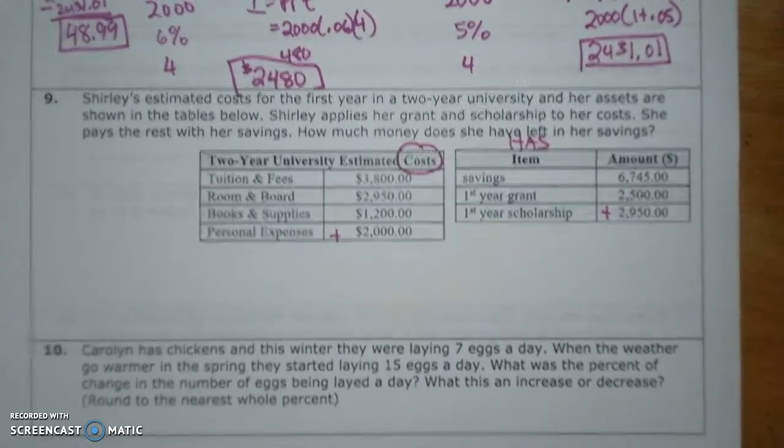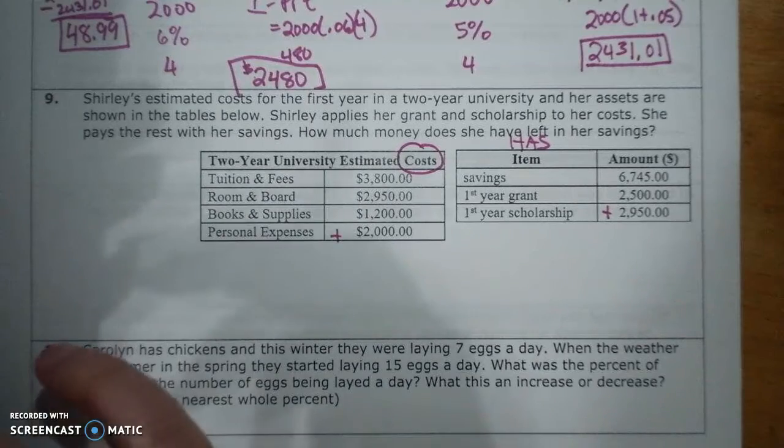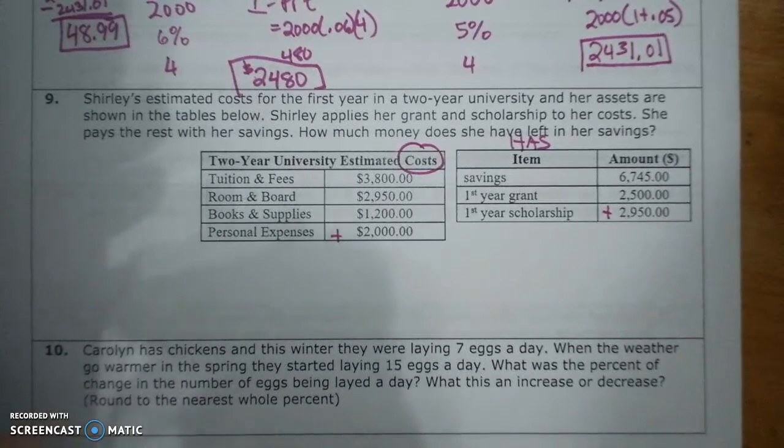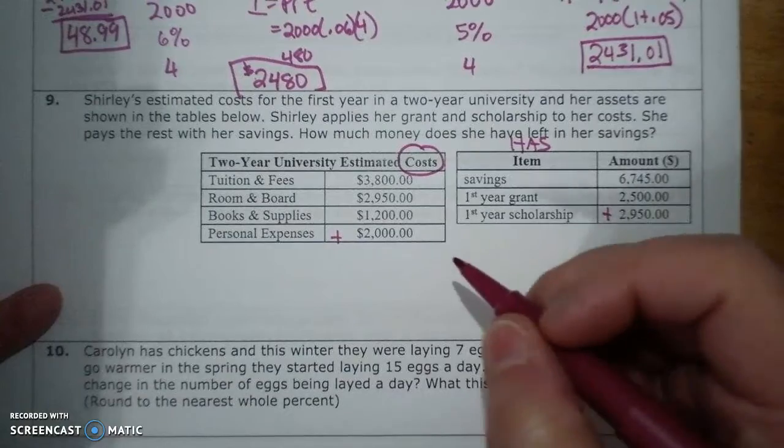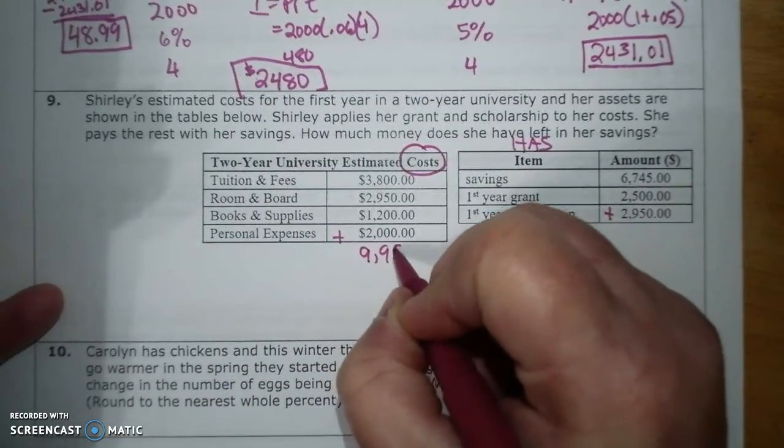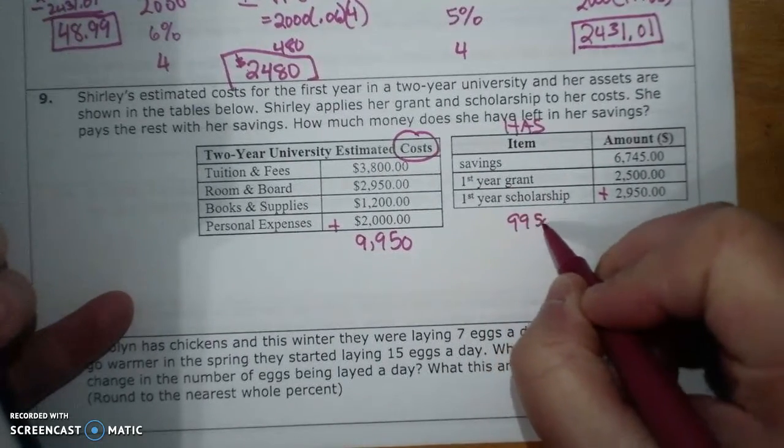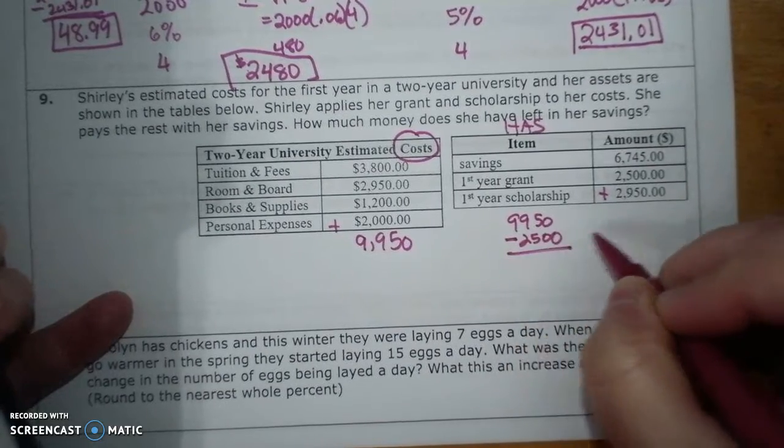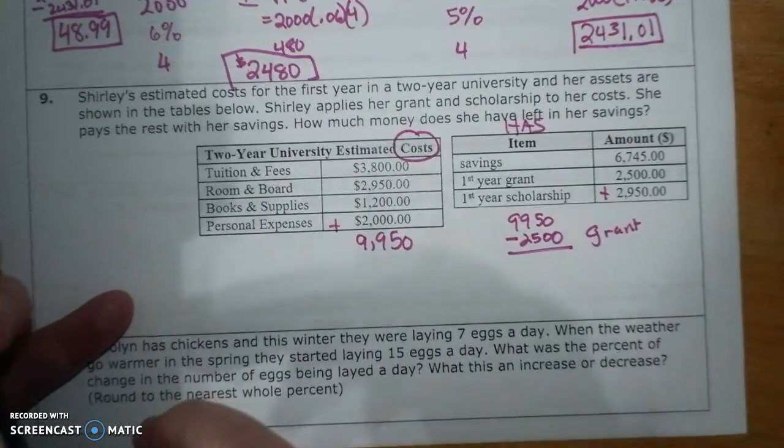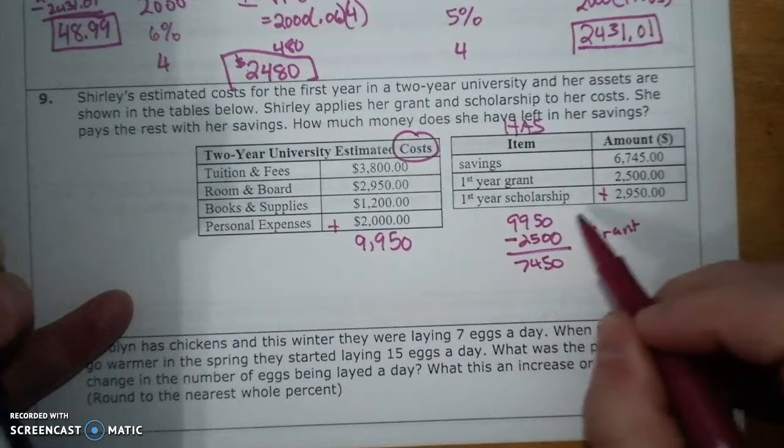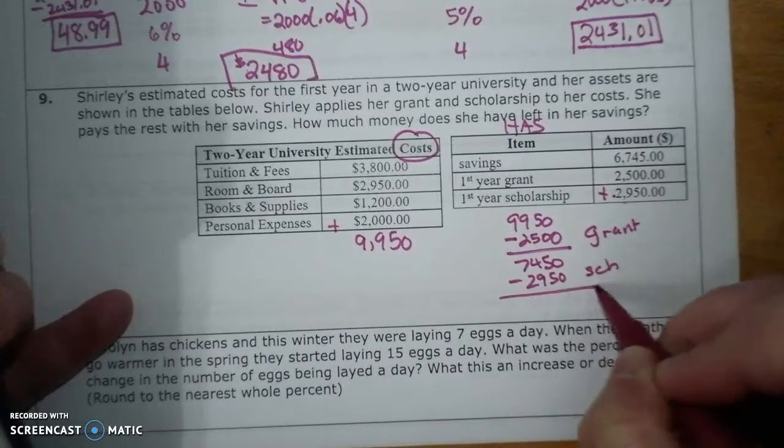So when I do this, I'm going to find out first the cost. My cost is $3,800 plus $2,950 plus $1,200 plus $2,000 is $9,950. Now I'm going to use my grant, so I'm going to do $9,950 minus $2,500, that's my grant.